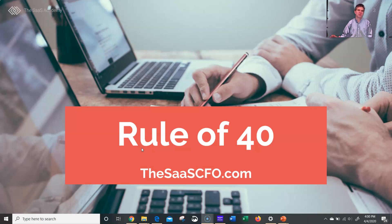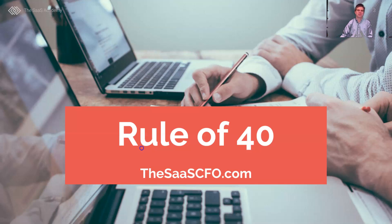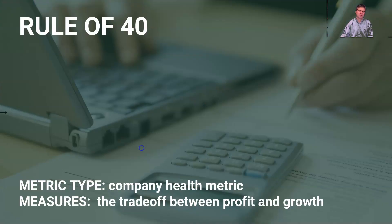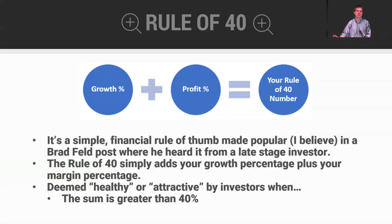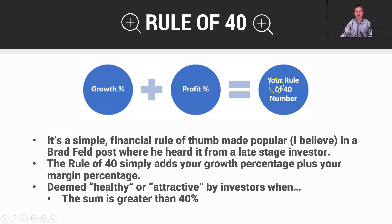Greetings, this is Ben Murray, the SaaS CFO, with a video lesson on the Rule of 40. The Rule of 40 is a company health metric — it measures the trade-off between profit and growth. The Rule of 40 formula is straightforward: growth plus profit equals our Rule of 40 number.